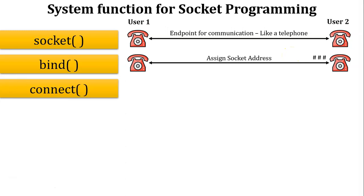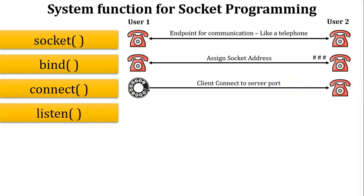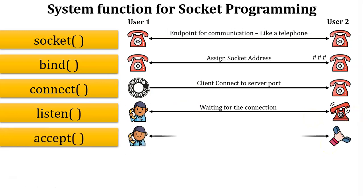The connect function is like user 1 dialing user 2's telephone number to connect — the client connects to the server port. The listen function is like user 2 hearing the incoming telephone ring — it means waiting for a connection. The accept function is like user 2 picking up the receiver to accept the call — it means the server accepts the connection.